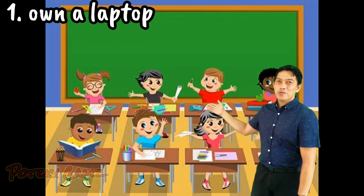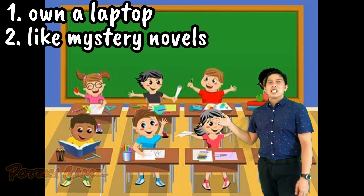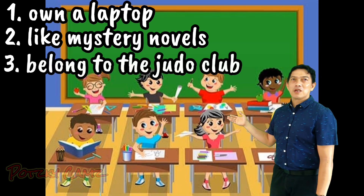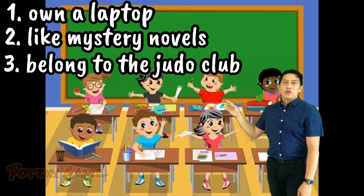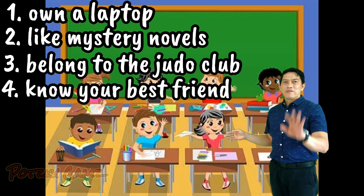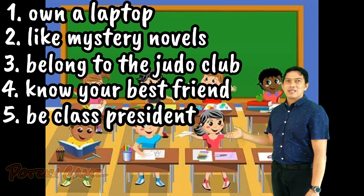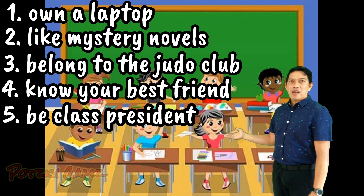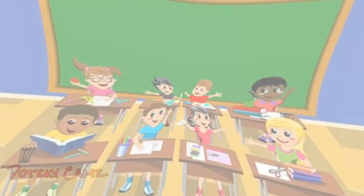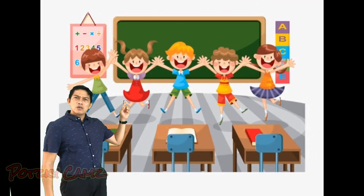Number two: 'like mystery novels.' Number three: 'belong to the judo club.' Number four: 'know your best friend.' Number five: 'be class president.' And number six: 'have a smartphone.' I would like you to remember these.